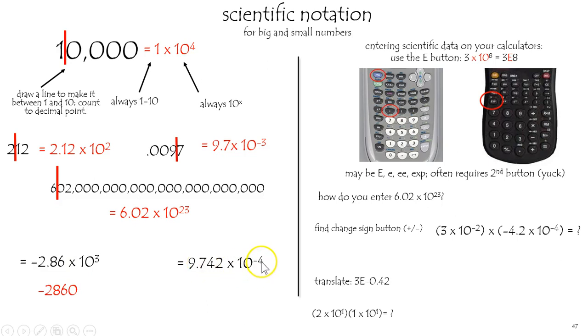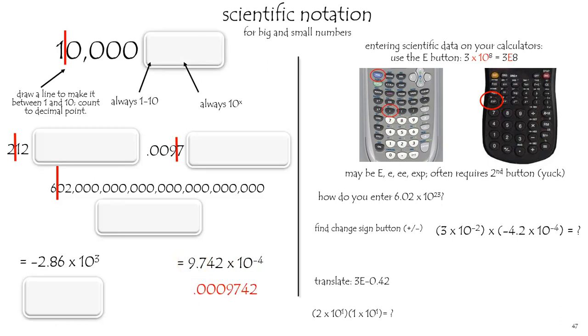This says 4 decimal places to the left. No problem. The 9 takes up one of them and the other 3 zeros do the rest. So that is 9.742 times 10 to the minus 4, expressed as a regular number.